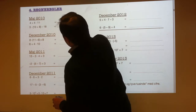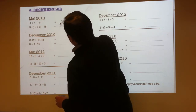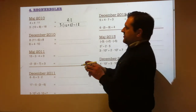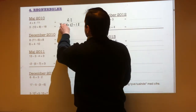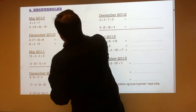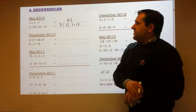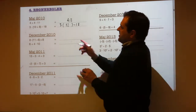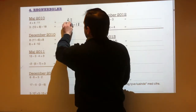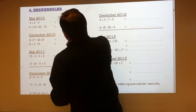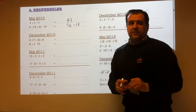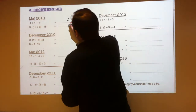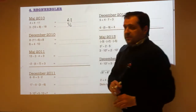3 times (10 plus 8) minus 18. You've got to do the brackets first. 10 plus 8 is 18. So it's the same as 3 times 18 minus 18. You've got to do the 3 times 18 first. 3 times 18 is 54. So it's the same as 54 minus 18, which is 36.